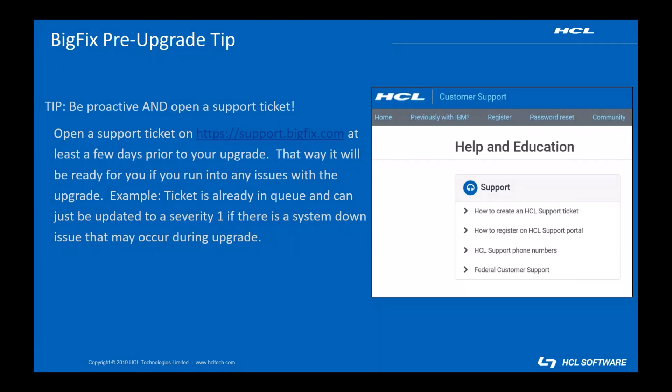Here's a tip and suggestion that we always give our customers before the upgrade. Be proactive and open a support ticket at support.bigfix.com. We recommend opening a support ticket at least a few days prior to the upgrade so that it will be ready for you if you run into any issues. For example, if there happens to be a system down issue that occurs during the upgrade, you already have that ticket in queue. You can respond to the ticket via email or phone call, letting them know there is an issue during the upgrade so that the ticket can be bumped up to severity one and ready to be worked on.